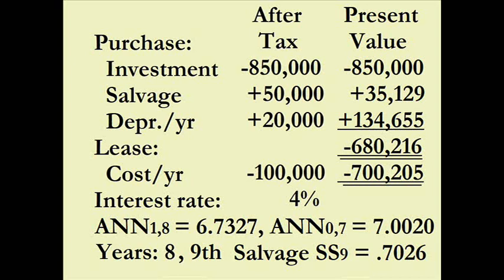For the lease after-tax cash flows — beginning of period, minus $100,000 each year, periods zero through seven — the annuity factor is 7.0020. Note that this is the former end-of-period annuity factor increased by four percent. Alternatively, go up one row on the end-of-period table and add the number one to get the same factor of 7.0-something.